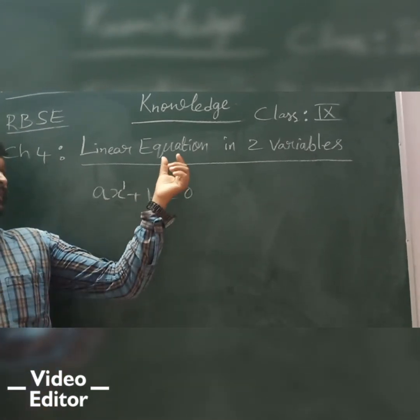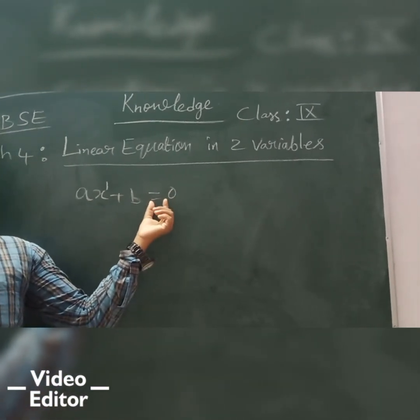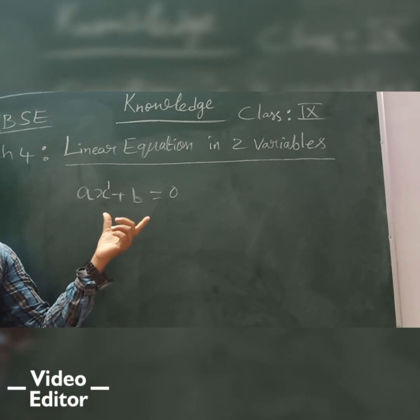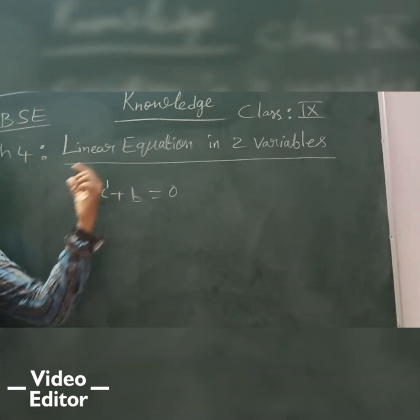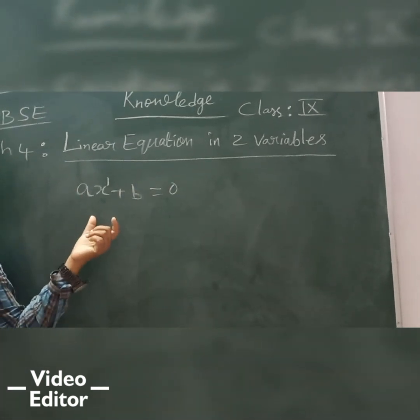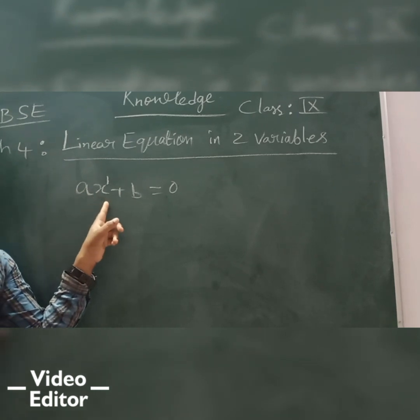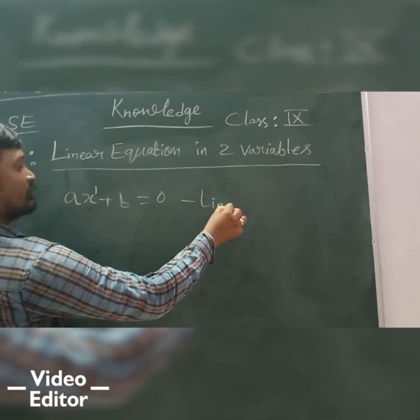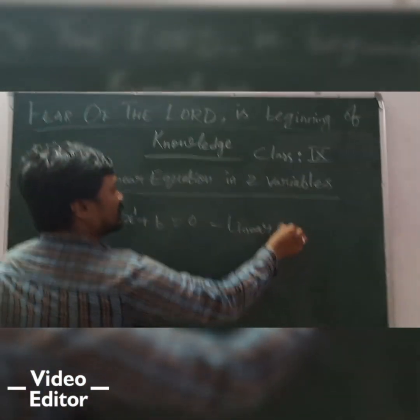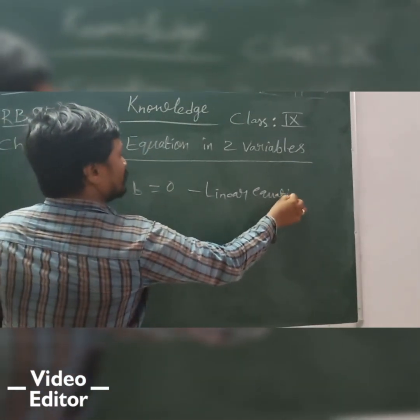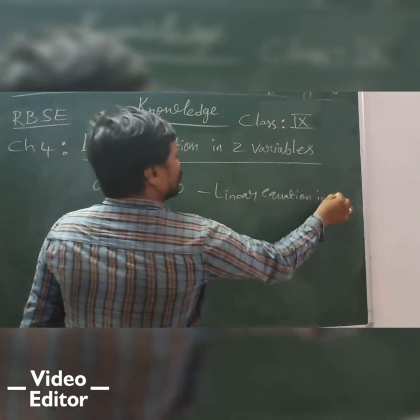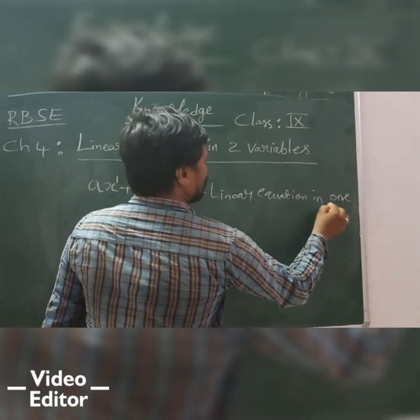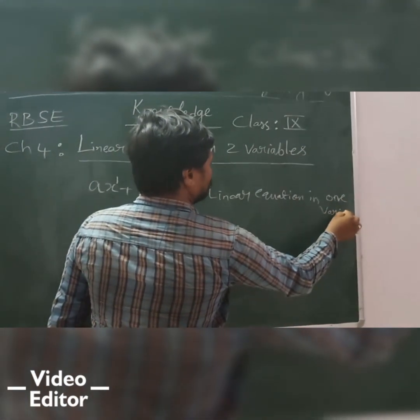Then, if equal to symbol is there, that is called as equation. So, this all together, linear equation in one variable. You can call it as linear equation in one variable.